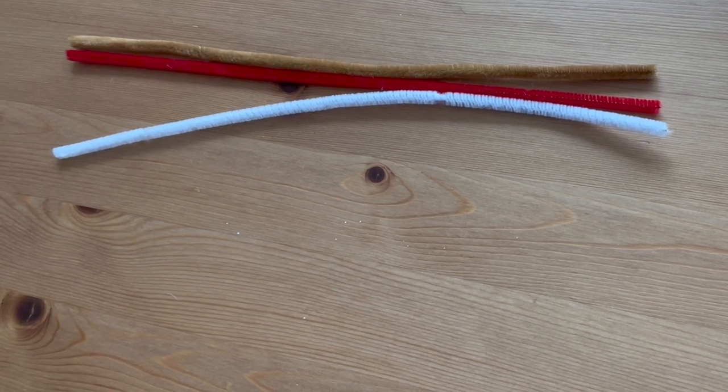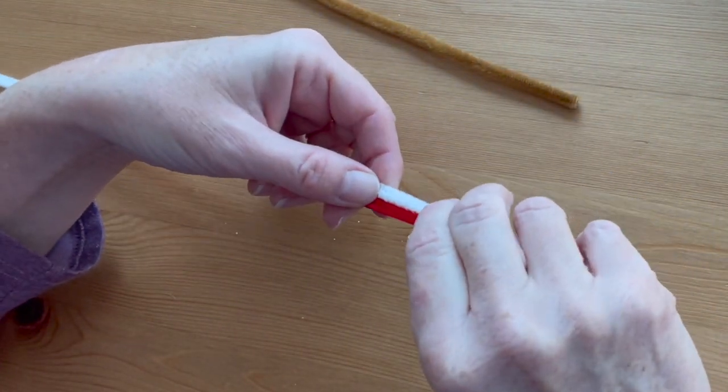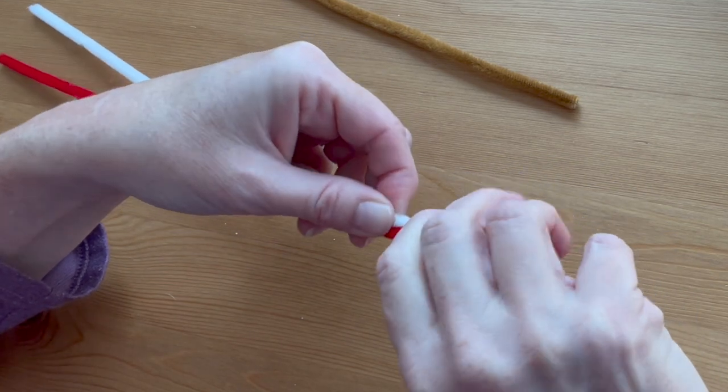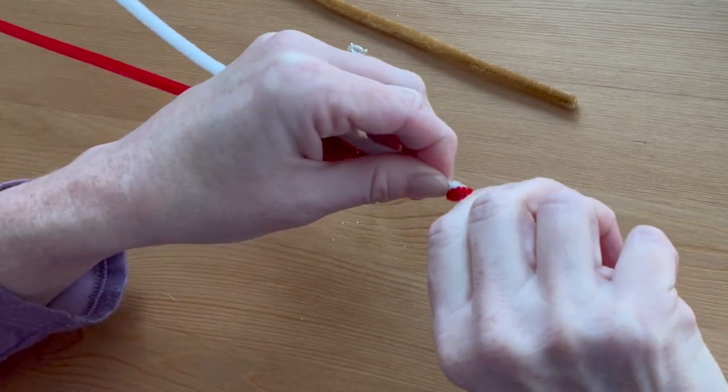For the peppermint lollipop, you'll need a red, white, and brown pipe cleaner. Twist the red and the white pipe cleaners together from top to bottom.